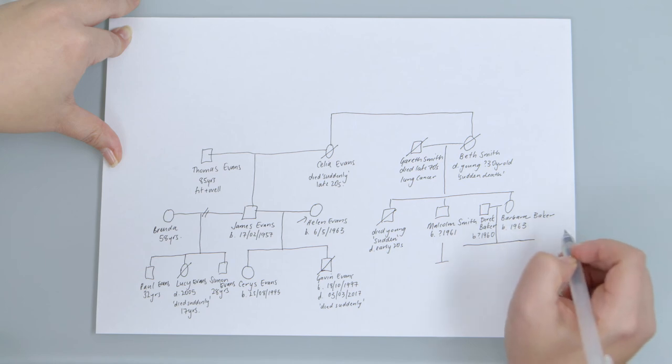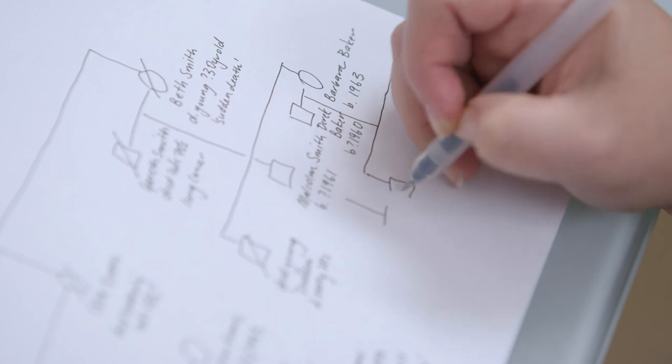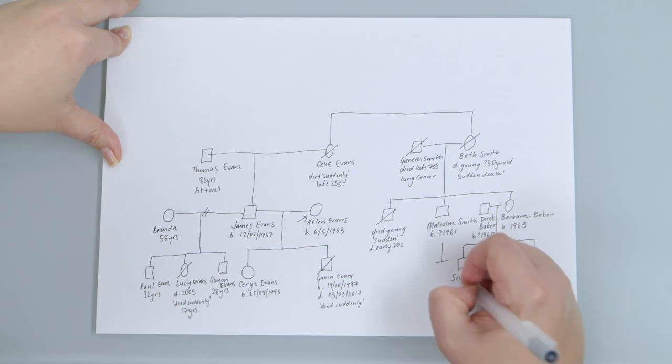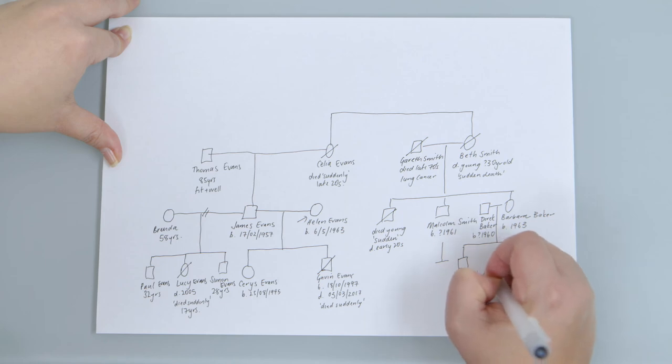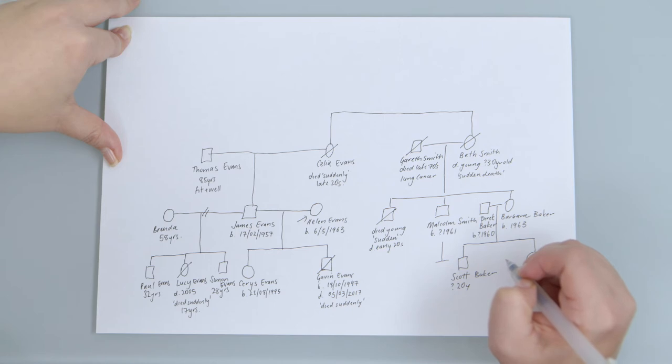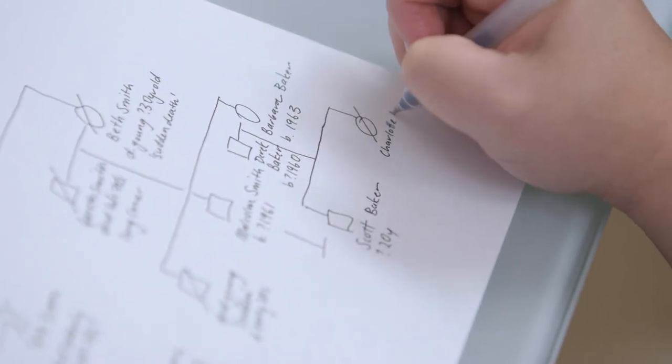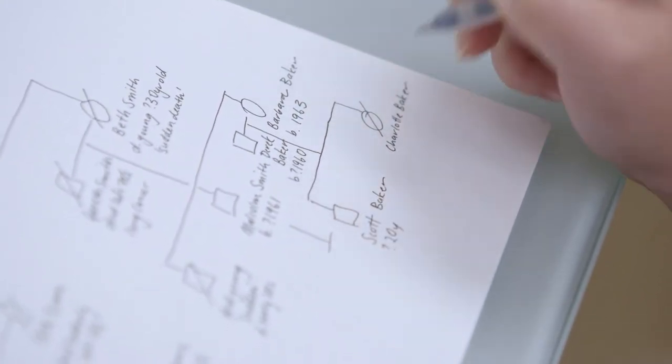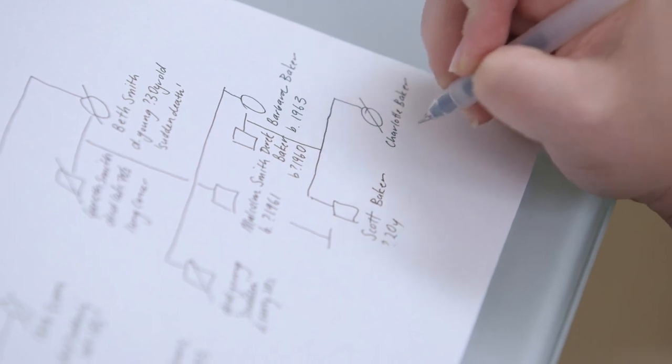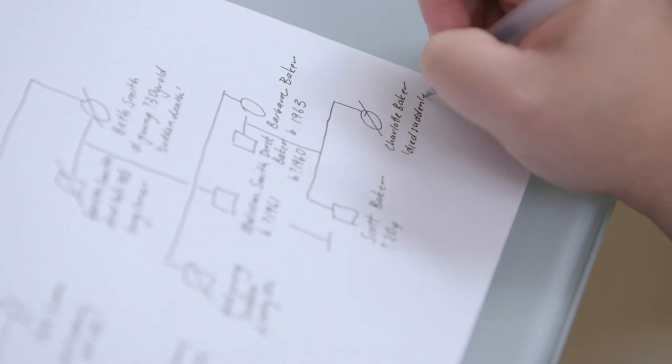And does Charlotte have any other siblings? Yes, she had a brother called Scott. He's away at university now. I think he's 20. Okay, and does he have any health problems that you're aware of? Not that I know of, no. And Charlotte, you said died a few years ago, is that correct? Yes. I mean, do you know how old she was when she died? Yes, she was only 14. That's very sad.